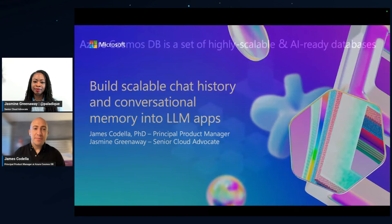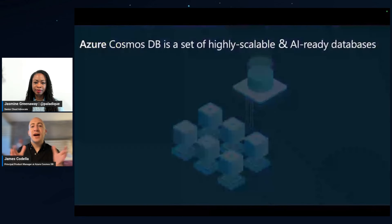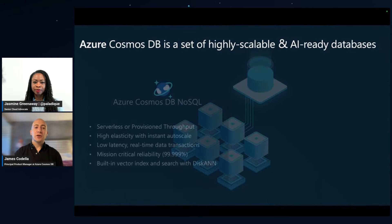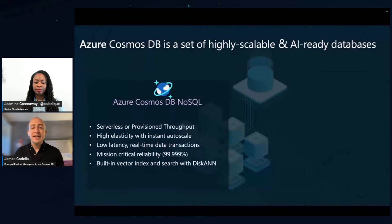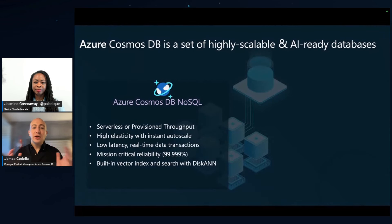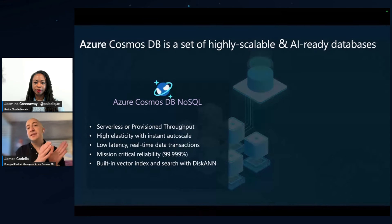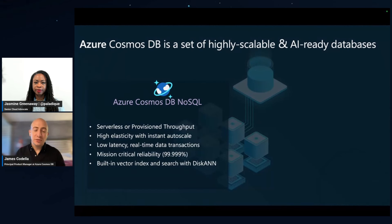Let's have a quick recap on Cosmos DB. It's a set of highly scalable and AI-ready databases. We have our core Cosmos DB for NoSQL offering that offers a serverless or provision throughput model, has high elasticity with instant autoscale, low latency with real-time data transactions — often guaranteed under 10-millisecond point reads and writes for the same region — with mission-critical world-class reliability of five nines.